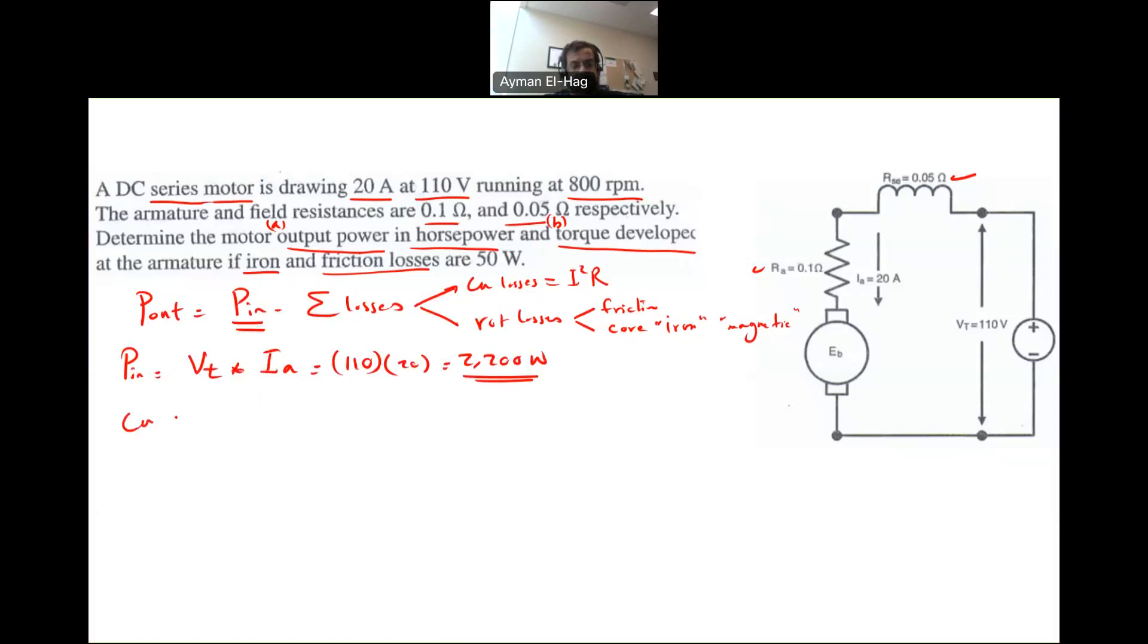Copper losses, basically we have only one current, which is IA square times R shunt plus RA. So it is 20 amp square times the summation of these two resistors, 0.05 plus 0.1, and this will give me 60 watt. This is how much losses in the winding.